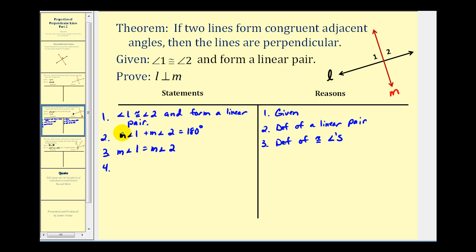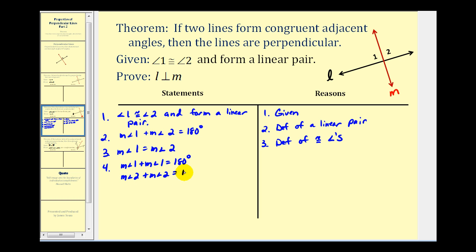Now combining those steps and using substitution, we can say that the measure of angle one plus the measure of angle one equals one hundred eighty degrees — by replacing the measure of angle two with the measure of angle one since they are equal. We can also say that the measure of angle two plus the measure of angle two equals one hundred eighty degrees. This is by the substitution property.